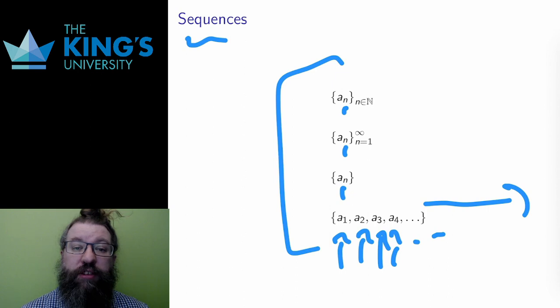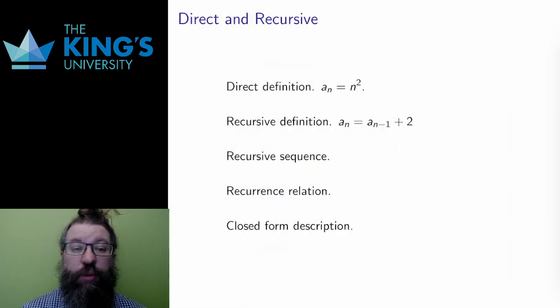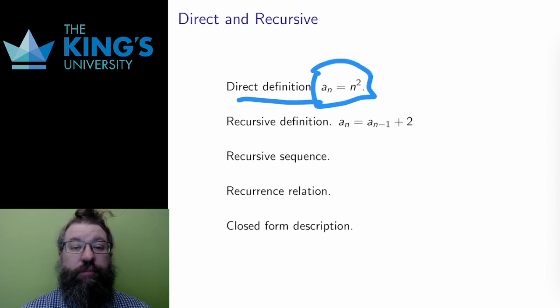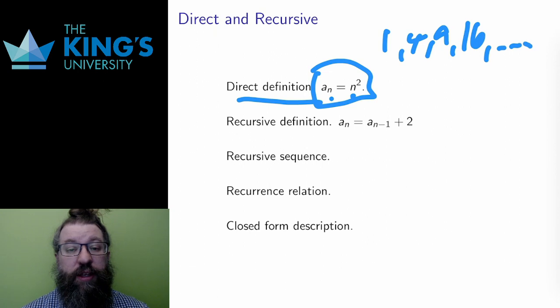There are two main ways of presenting a sequence. A direct or closed form description is a formula in the index. The nth number is, if the nth number is n squared, then it describes the sequence 1, 4, 9, 16, and so on. n squared is a formula in the index n.